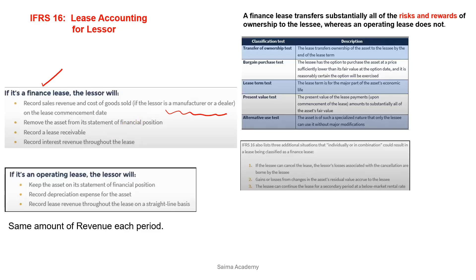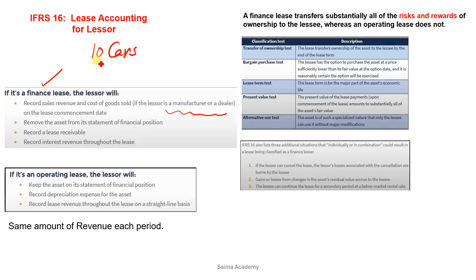The question we will solve in the next video. Here I will explain in three parts. We have seen that the Lessor is the Manufacturer and Dealer. Let's take Honda's example — suppose Honda is the Lessor, making assets and also giving them on lease. In the second point, what do we do? We remove the asset from its statement of financial position. Suppose Honda has made 10 cars — those cars are in its inventory.